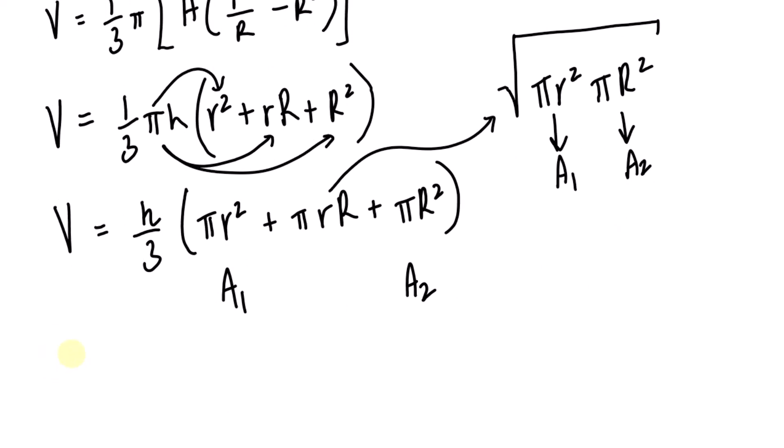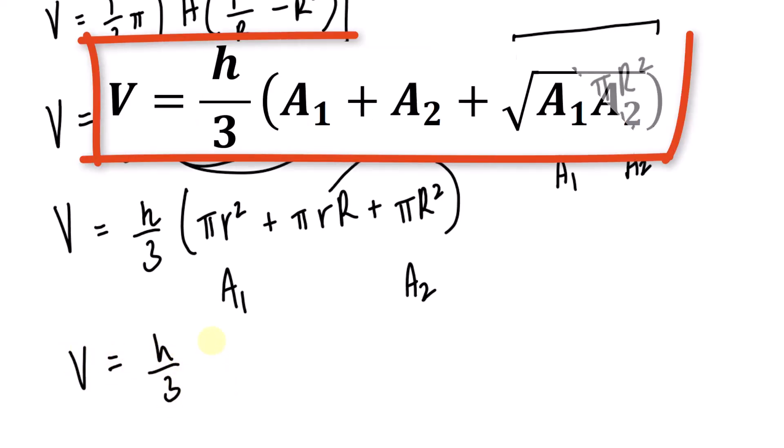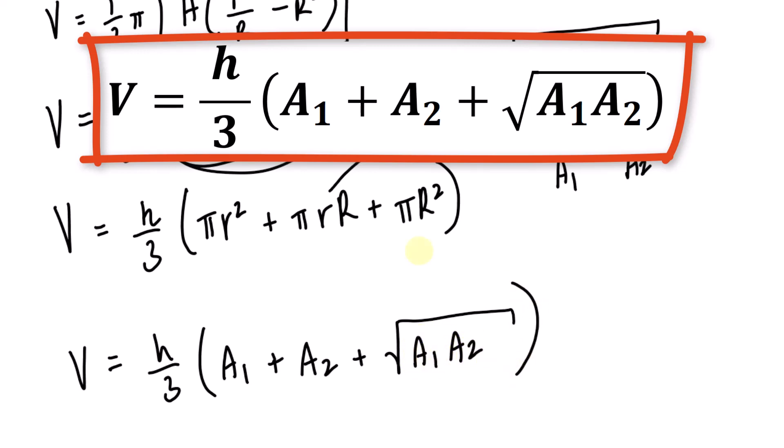If we put that all together, we end up with a generic formula for the volume of any frustum, whether it has a square base or circular base, being V equals h over 3, and in parentheses, A sub one plus A sub two plus the square root of A sub one times A sub two. Notice with that, we have successfully derived the volume formula of a frustum.